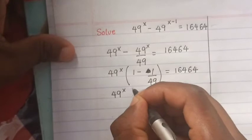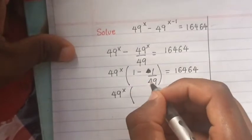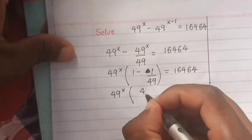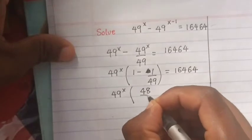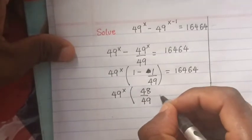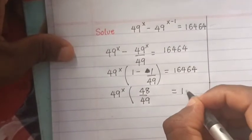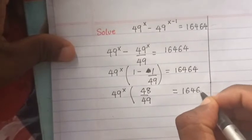Here, 49^x times (1 minus 1 over 49) is the same as 48 over 49, equals 16464.